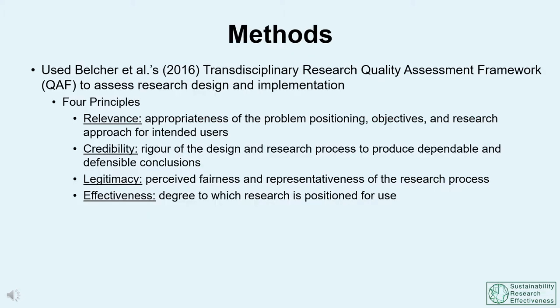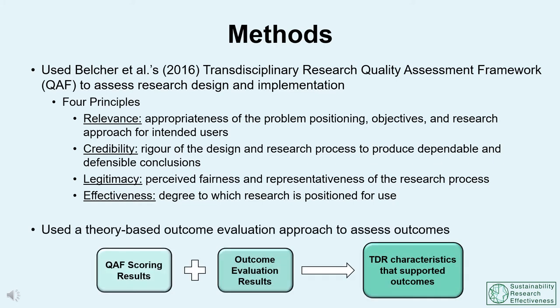We used the principles and criteria presented in the Transdisciplinary Research Quality Assessment Framework, hereafter referred to as the COAF, as a checklist of project elements that, in theory, should help project activities and outputs to be relevant, credible, legitimate, and effective. We scored each criterion to determine which elements of transdisciplinary research design and implementation were or were not present in the projects. When COAF results were paired with a theory-based outcome evaluation, we were able to draw connections between what projects did and what outcomes were realized.